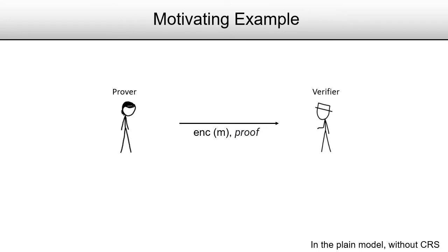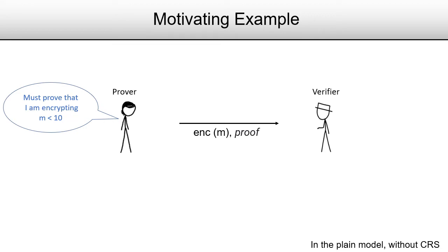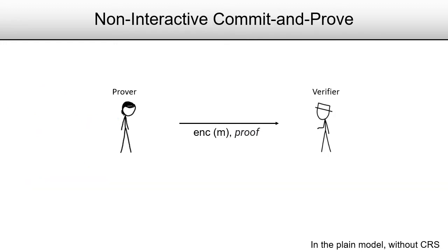If I want to keep transactions encrypted, I'd also like to be able to guarantee that I am not cheating. So I can compute an encrypted transaction and then, without revealing exactly how much money I am transferring, prove that the amount I transferred is less than the total currency that I have in my account. As a simplification, let's consider a prover and a verifier: the prover encrypts a message M and would like to prove that the encrypted message is less than 10, but without revealing what this message is. This is called a commit-and-prove argument, and we would like to be able to do this non-interactively.